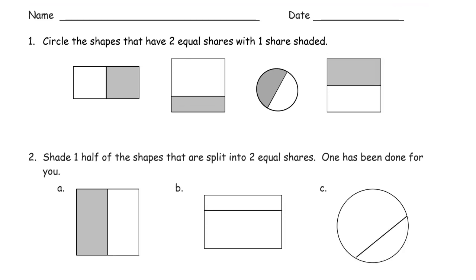We're circling shapes that have two equal shares with one share shaded in. So these two parts look the same with one of them shaded. This shaded part is way smaller than the unshaded part, so that's not two equal shares. These look equal, and these look equal.